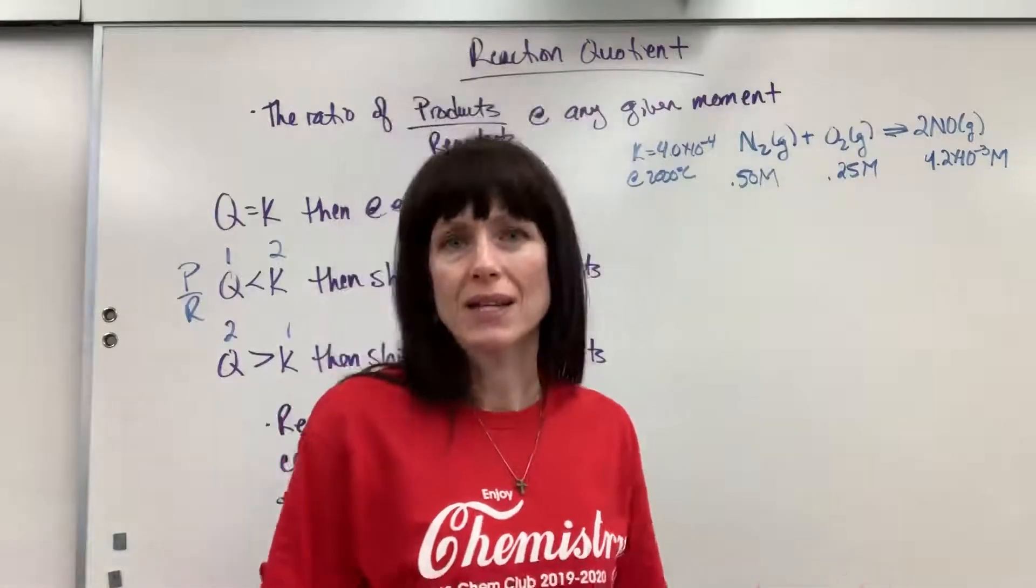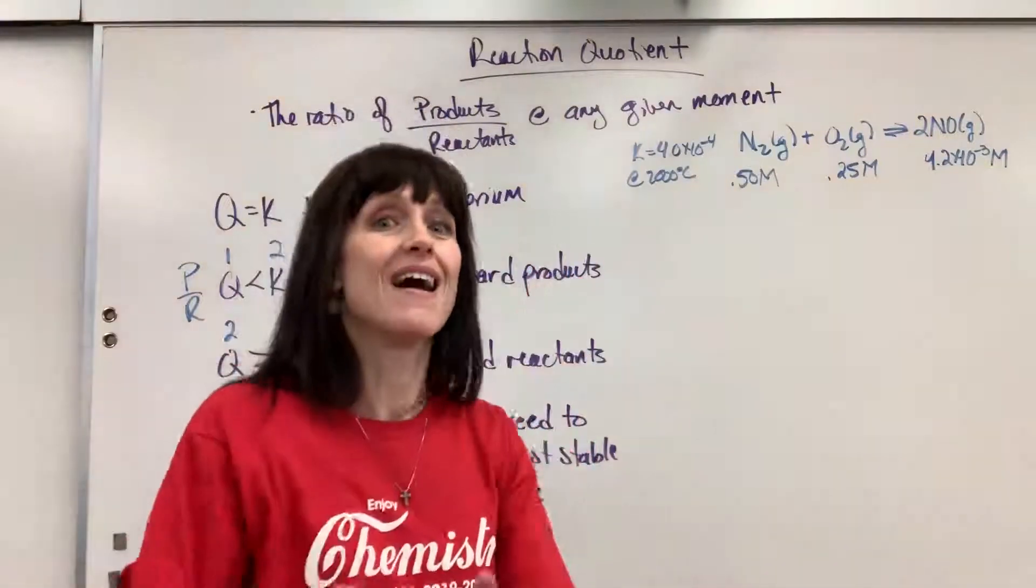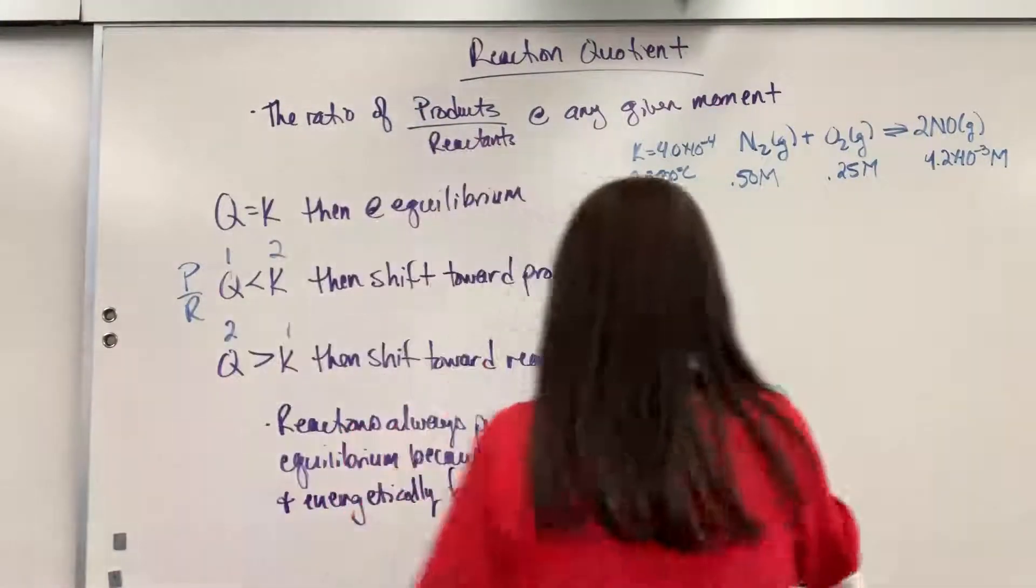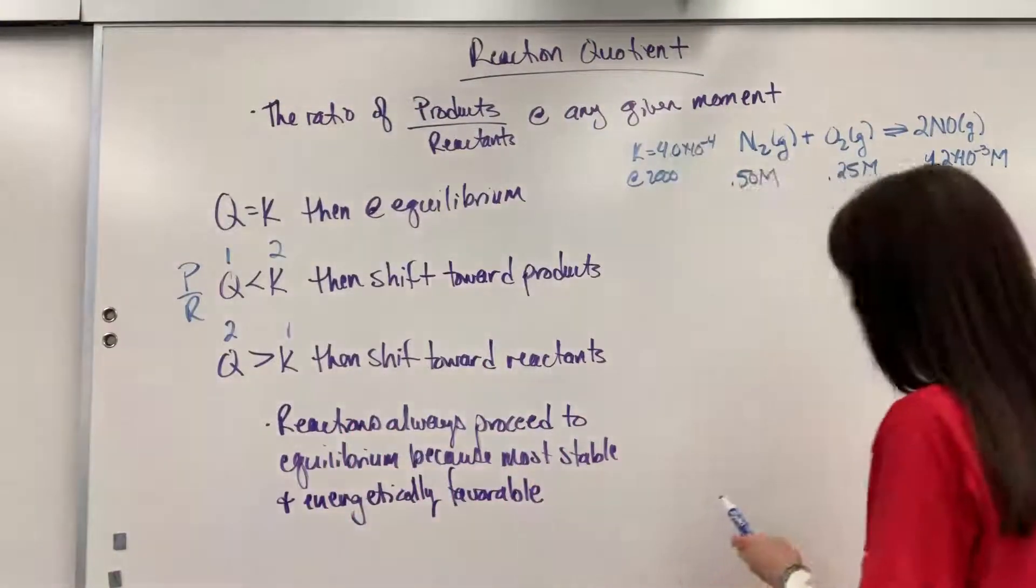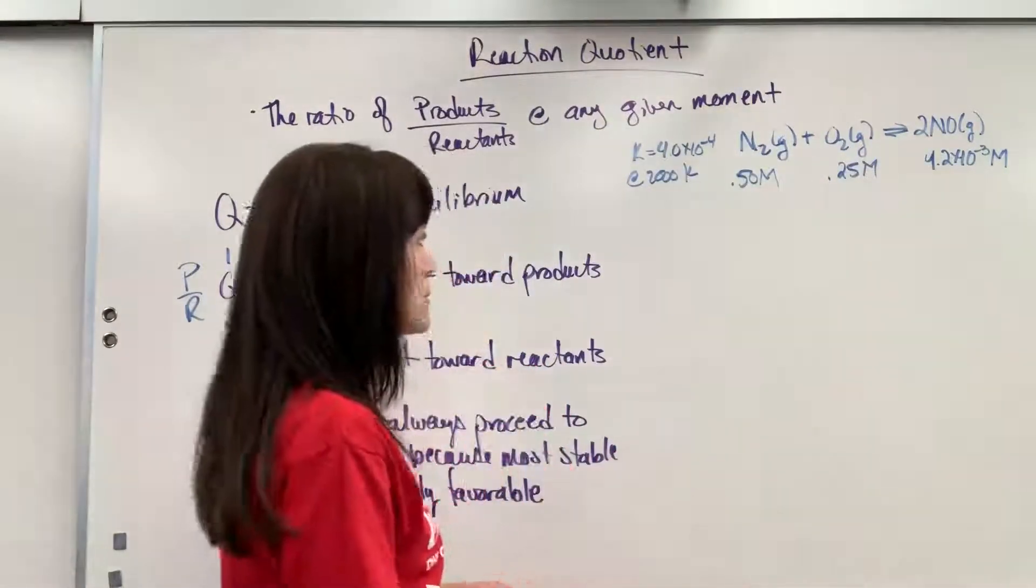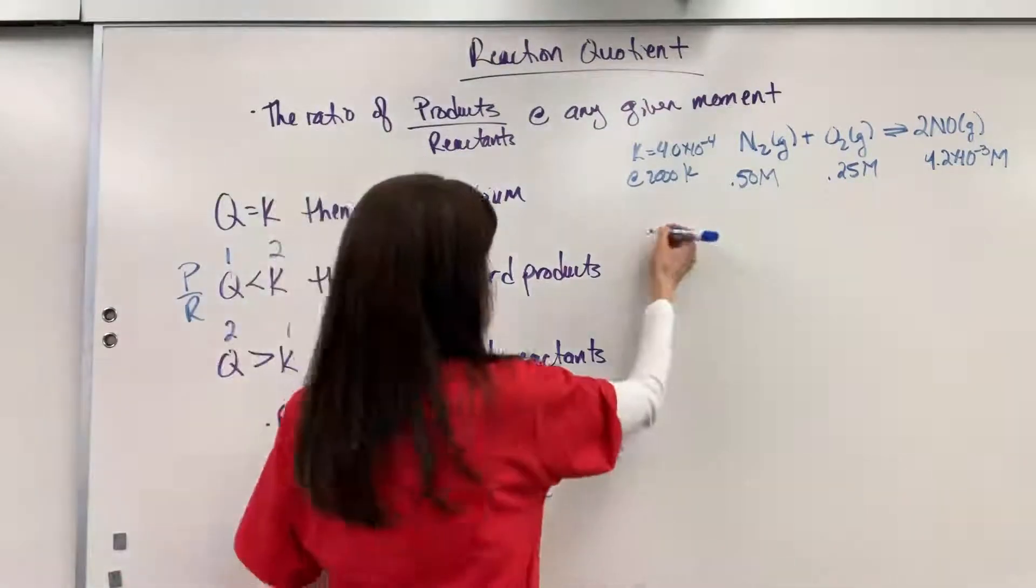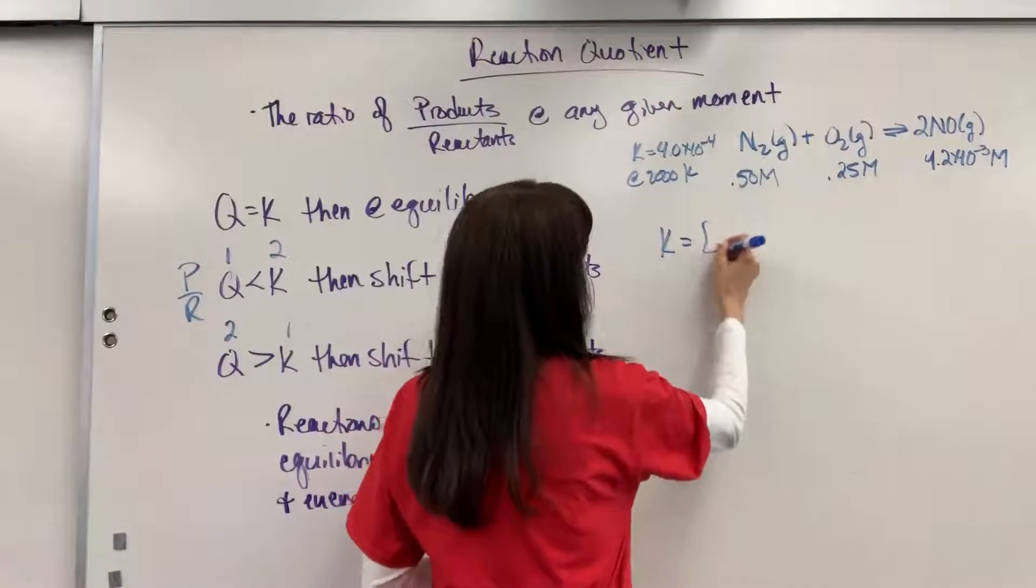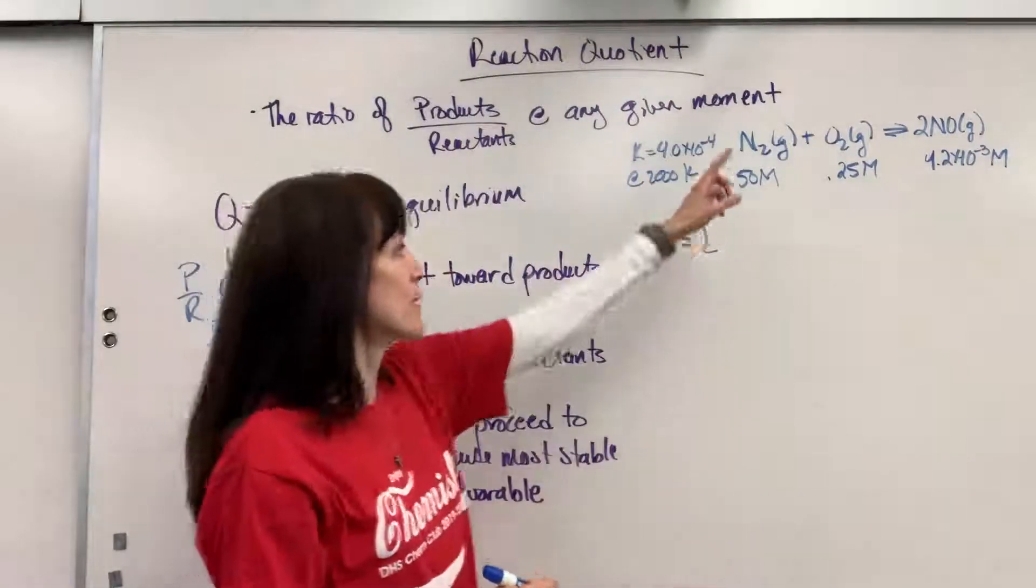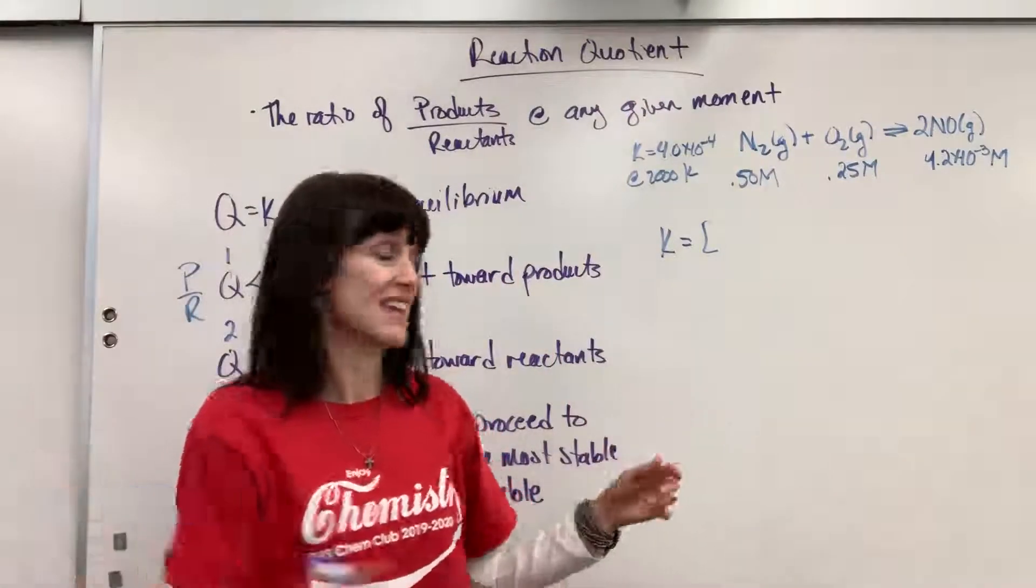Sometimes it will say it shifts to reactants or products, something like that. But you'll know you are not at equilibrium. So let's look at how we're going to figure this out. I wrote down everything I just read. First thing we do is write the equilibrium constant expression. K is going to be products over reactants. Remember, we use gases and aqueous. We never use liquids or solids. These are all gases. I can use everything.